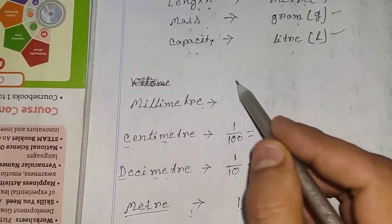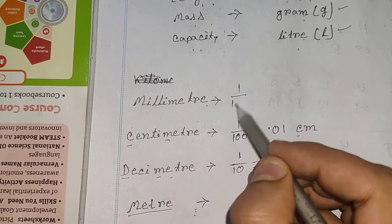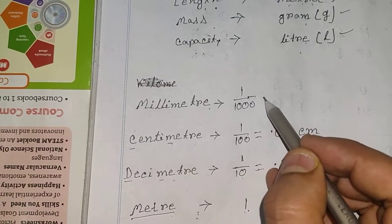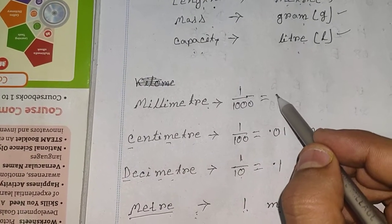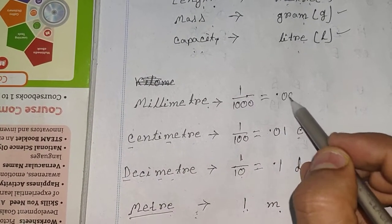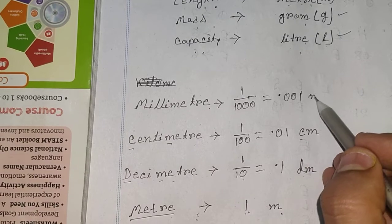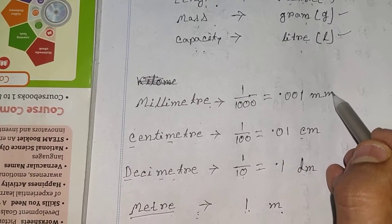Now the smallest unit is millimeter. We divide one by one thousand, so it becomes 0.001 mm — that is millimeter.